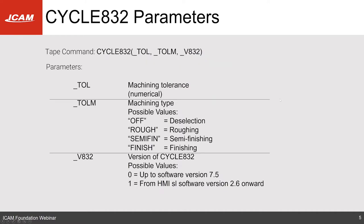Cycle 832 uses three parameters. The first is a machining tolerance — a numerical value. The second is the machining type: 'off' turns off Cycle 832 (same as writing Cycle 832 with empty brackets); options are rough, semi-fin, and finish — and it's important to have double quotes around that parameter. The third parameter depends on your controller software version: use zero for 7.5 and under, and one for 840D SL or above version 6.